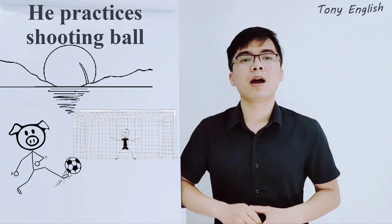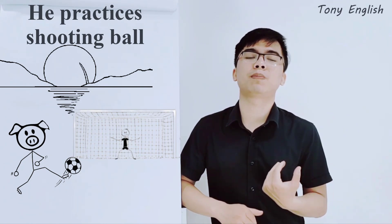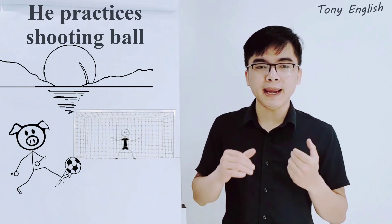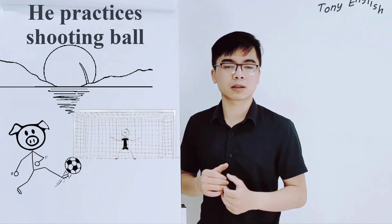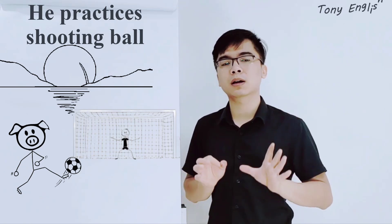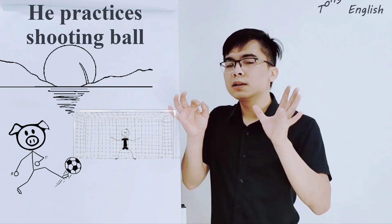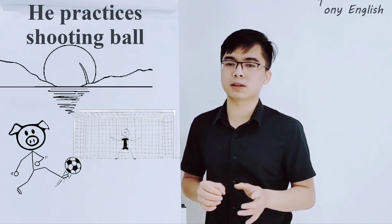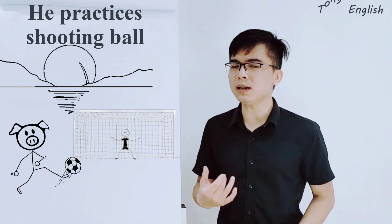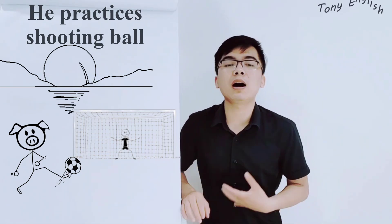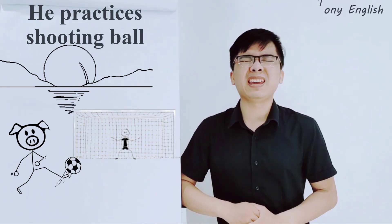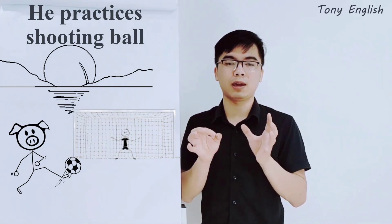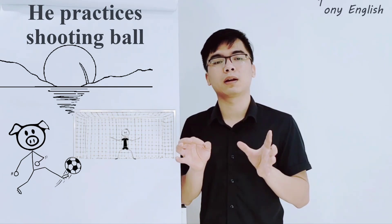So, when? When did the pig practice shooting ball? He practiced shooting ball in the morning — in the morning, at 5am, at 5 o'clock. Did the pig practice shooting ball in the evening? No, no, no. He did not practice shooting ball in the evening. He practiced shooting ball in the morning.